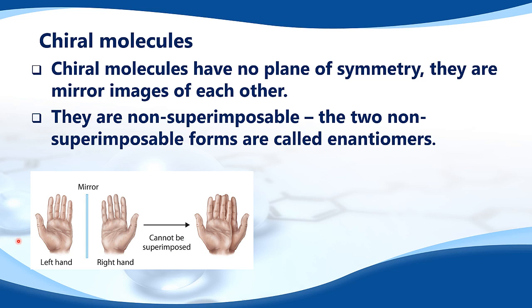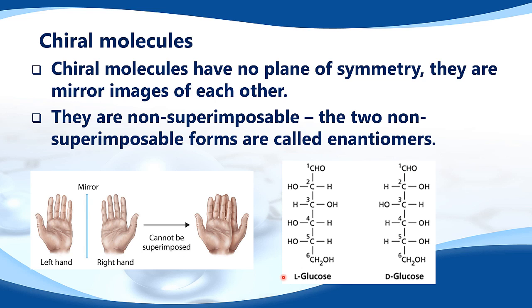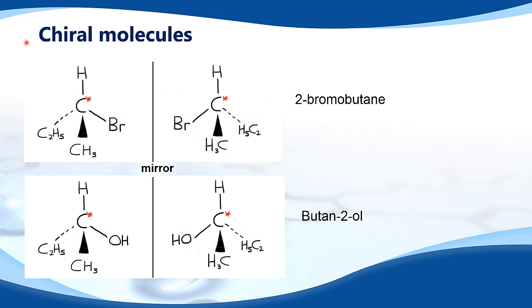Using our hands as an example: our left hand and right hand are mirror images of each other, therefore they cannot be superimposed. Here we have two chiral molecules — L-glucose and D-glucose. They are mirror images of each other, they are non-superimposable, so they are known as enantiomers. Here are some more chiral molecules.